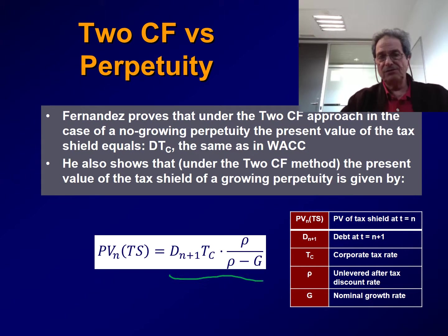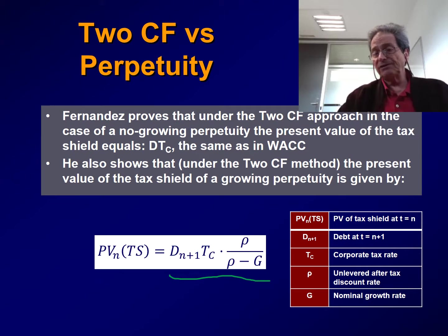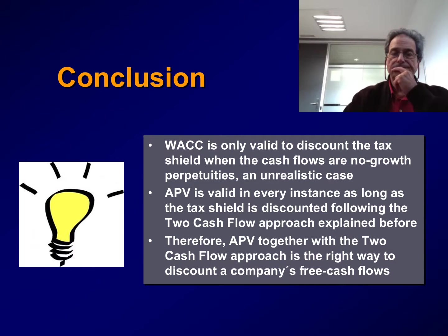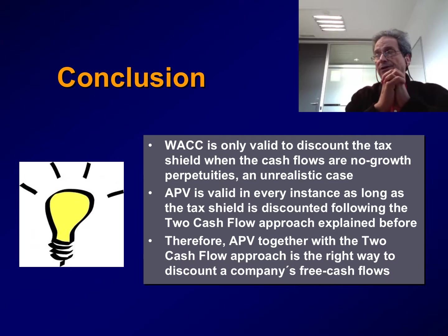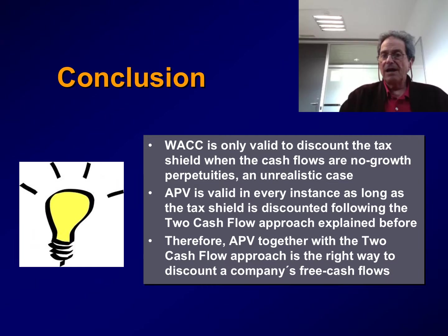In conclusion: WAG is only valid to discount the tax shield where the cash flows are no-growth perpetuities, which is of course an unrealistic case. APV is valid in every case, always, as long as the tax shield is discounted following the two cash flow approach we explained. So APV together with the two cash flow approach is the right way to discount a company's free cash flows. And this is everything we wanted to share with you today.